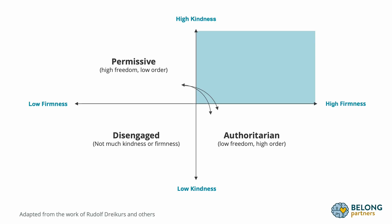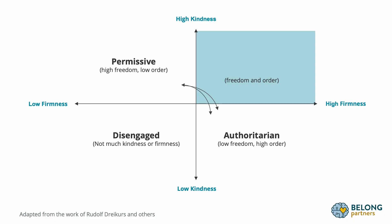In that upper right-hand corner, we have both kindness and firmness — both order and freedom at the same time. People often think about cooperation, young people supporting each other and taking leadership. In positive discipline, this is referred to as a democratic or authoritative teaching style — kind and firm at the same time.